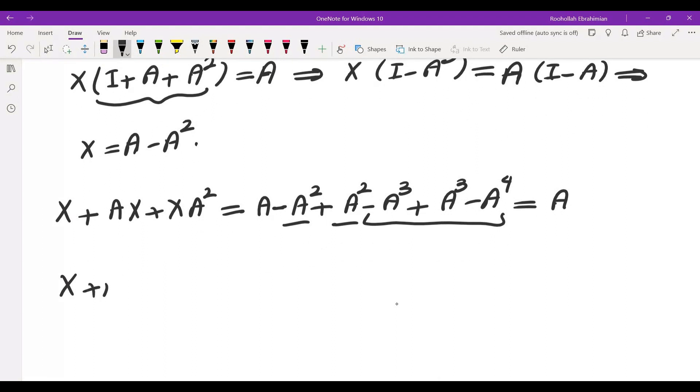So let's start with the equation X plus AX plus XA squared equals A. I started doing some manipulations hoping that I can somehow show that X and A commute, but in fact I was able to find X immediately from there.